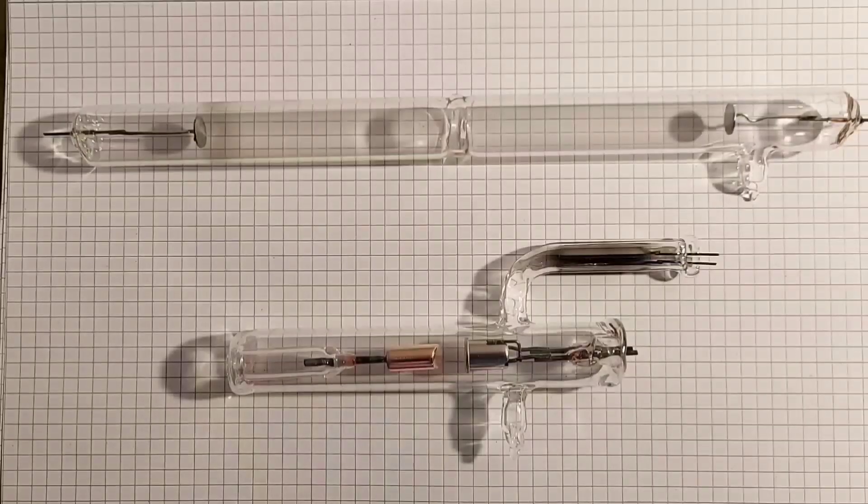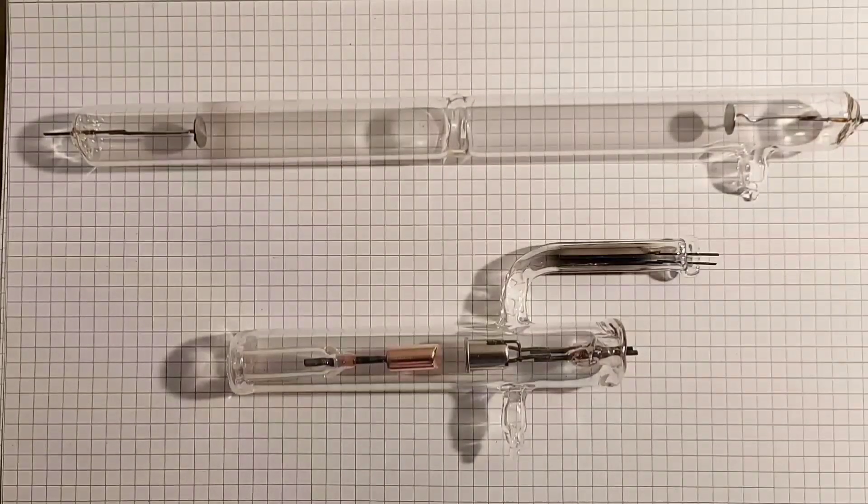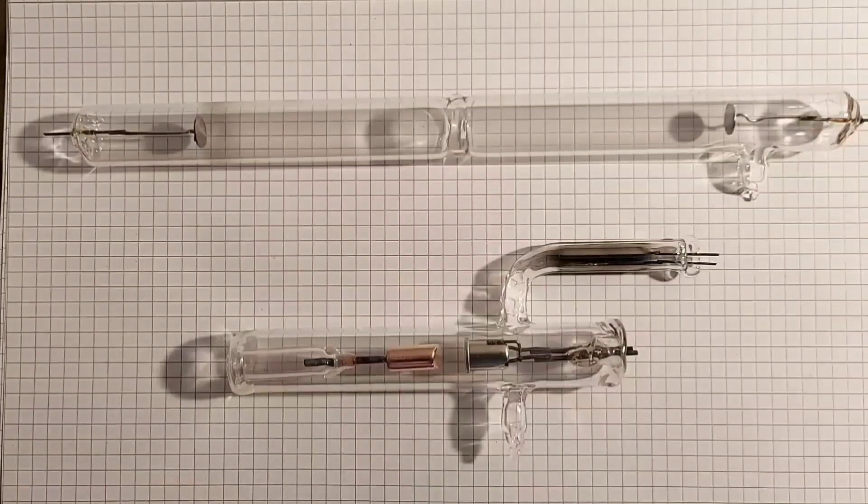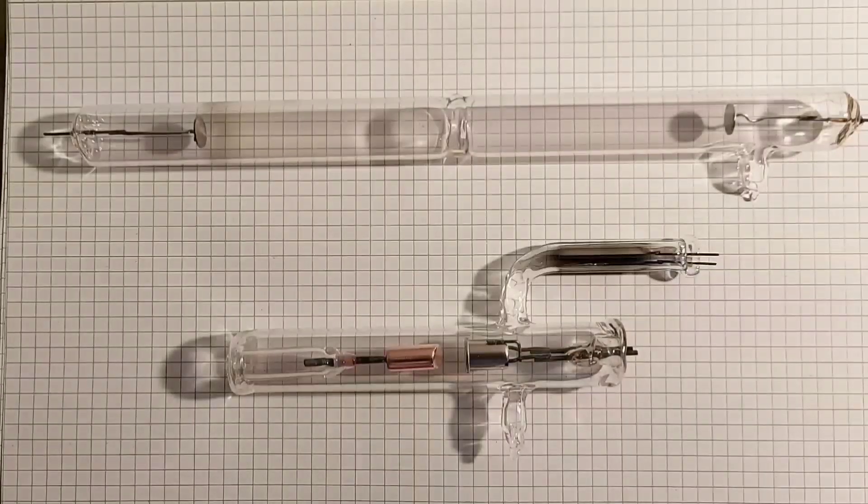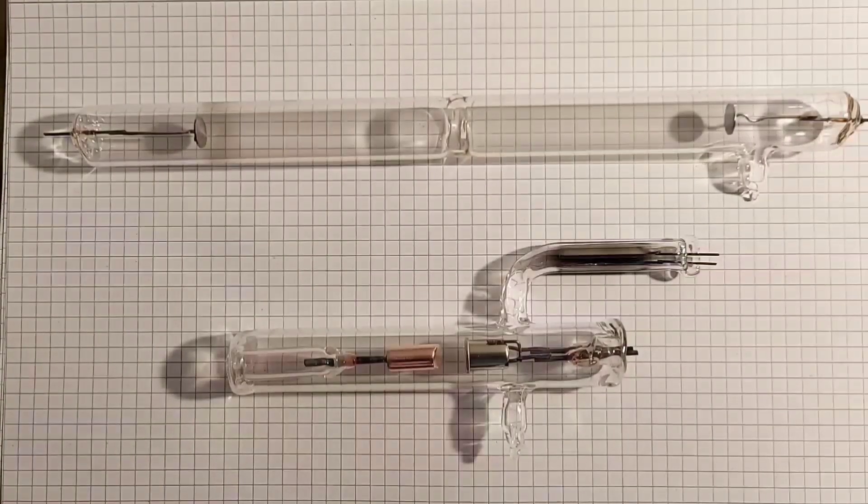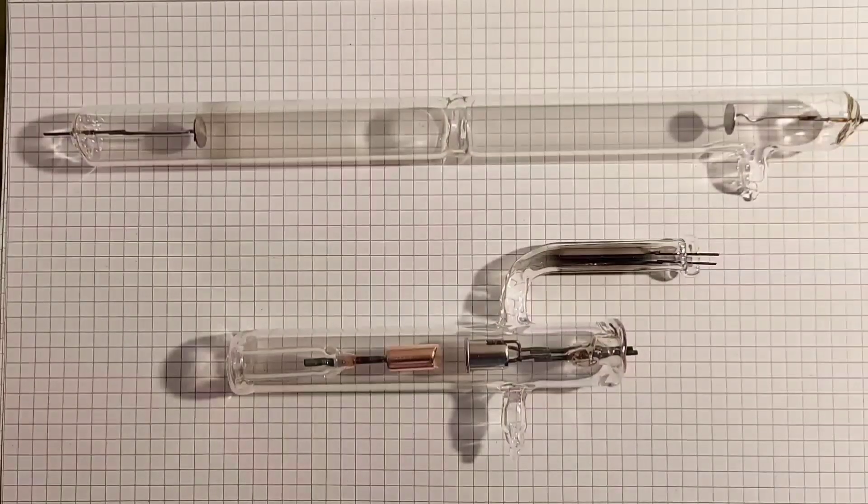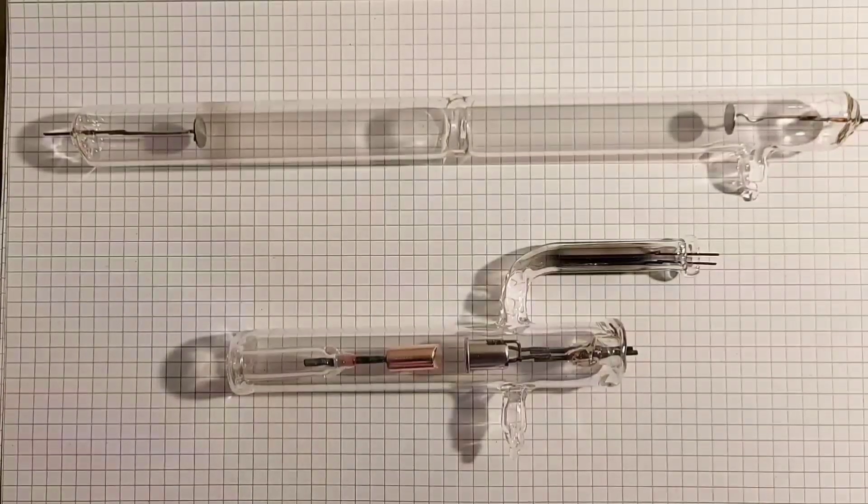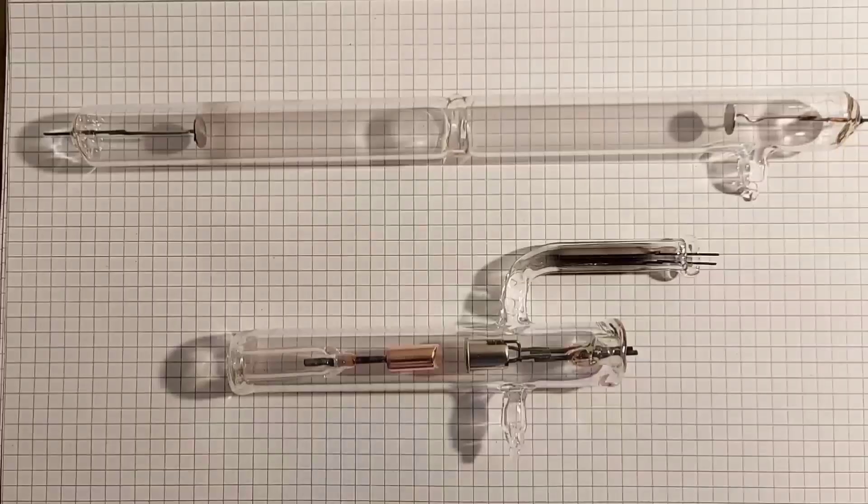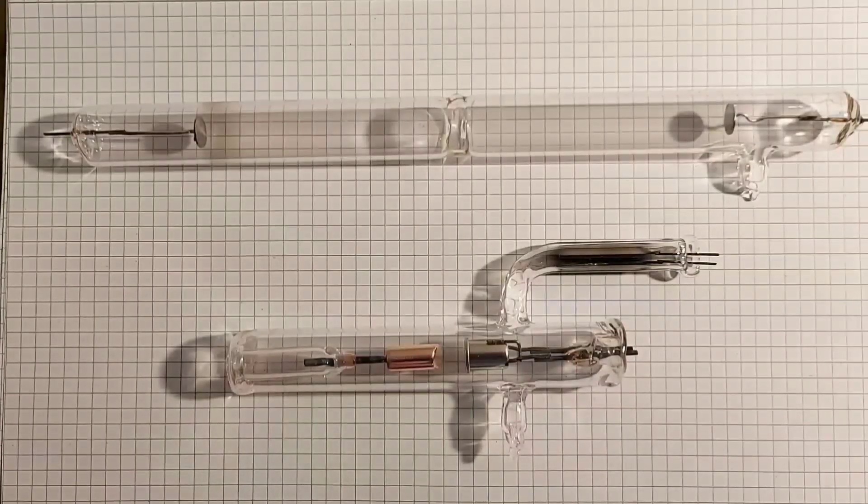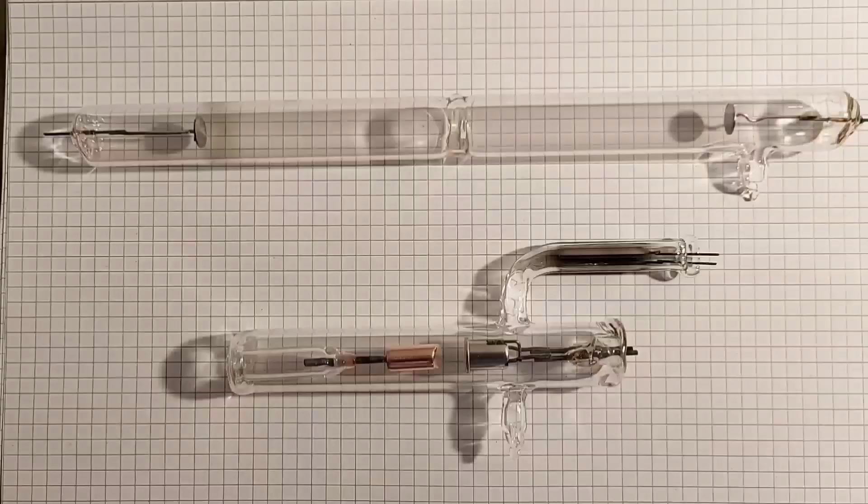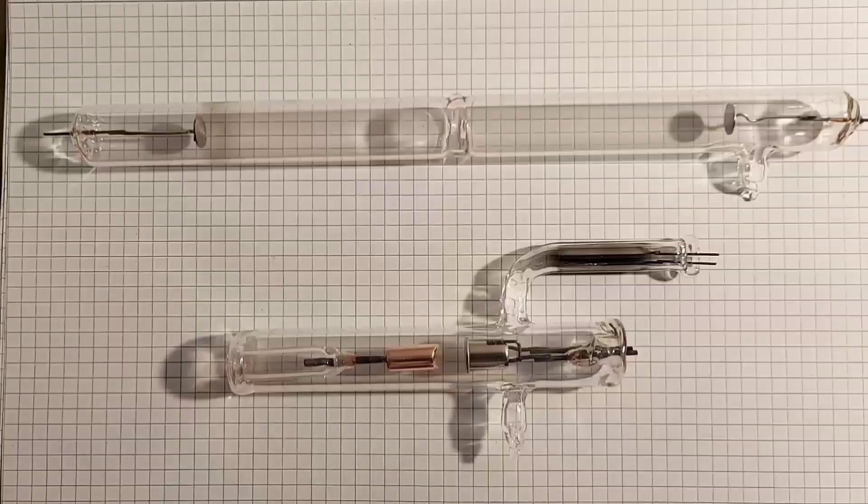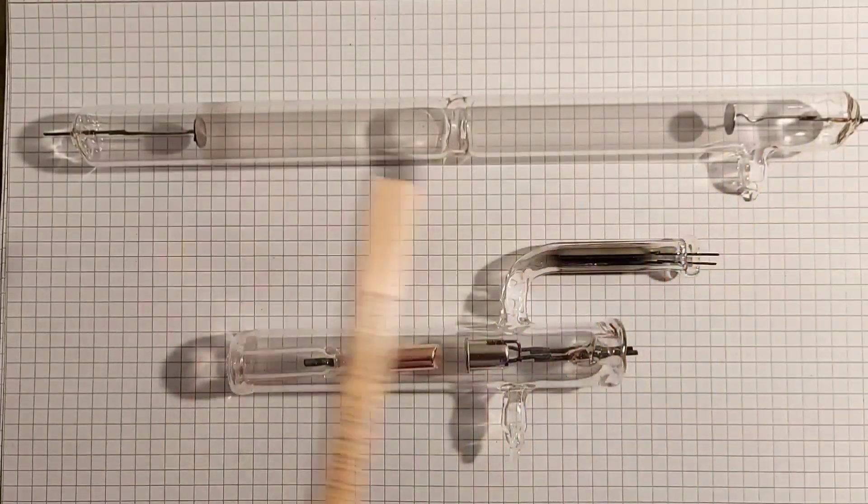And it was really a problem back then when they used cold cathode tubes for x-rays in medical or whatever. And that's why the tubes back then had some refresher but it was not perfect. And then like in 1900 they switched over to thermionic emission because you want for radiological images one specific voltage and not fluctuating like in cold cathode tubes.